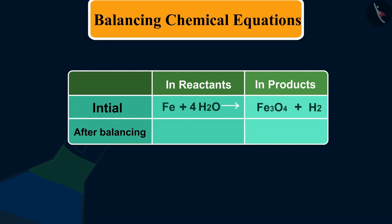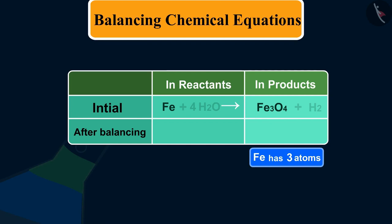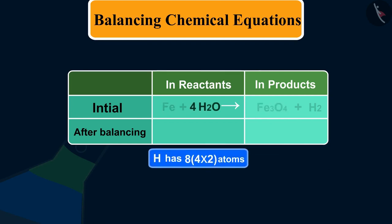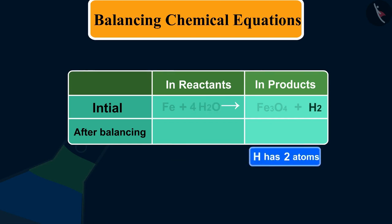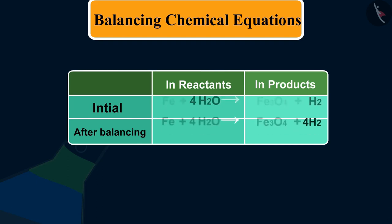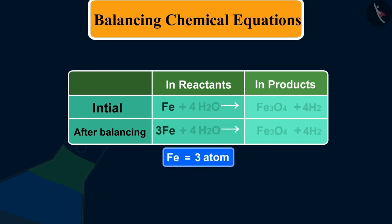Fe and H atoms are still not balanced. Fe has 1 atom on LHS and 3 atoms on RHS, and H has 8 (4×2) on LHS and 2 atoms on RHS. So to balance the hydrogen atom, the number of H₂ molecules on the right side needs to be 4. Now, to balance iron, on the left side we take 3 atoms of iron.